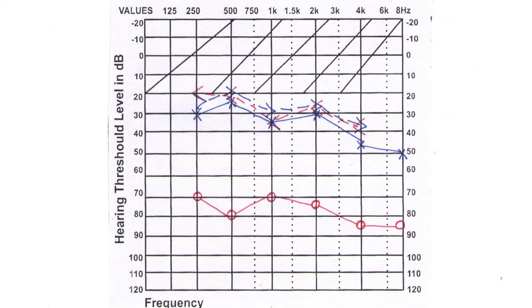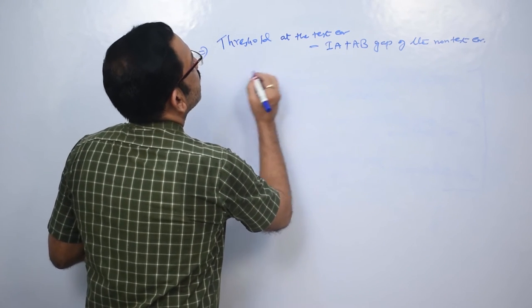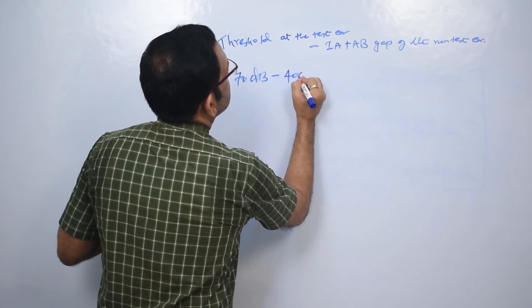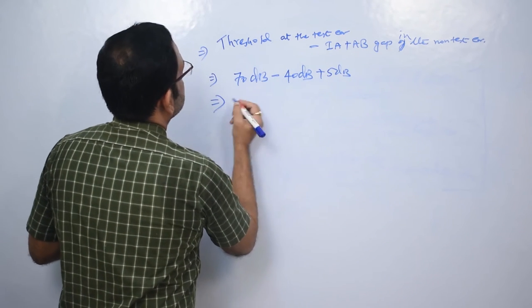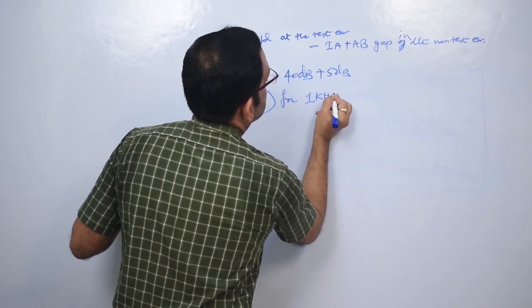In this particular audiogram, I shall only do the calculation at 1 kilohertz for air conduction masking using headphones. The threshold at the test ear at 1 kilohertz is 70 dB, and the air-bone gap in the non-test ear at 1 kilohertz is 5 dB. Therefore, as per the formula: 70 dB minus 40 dB plus 5 dB equals 35 dB, which is the minimum level of masking.